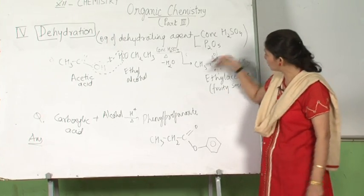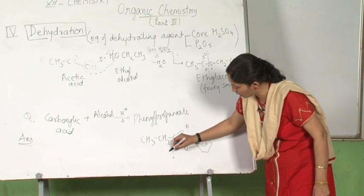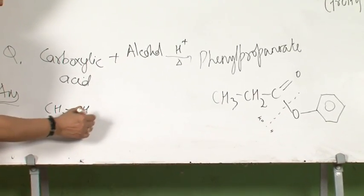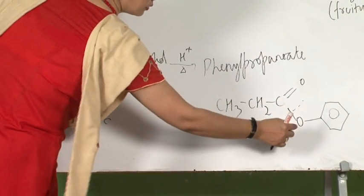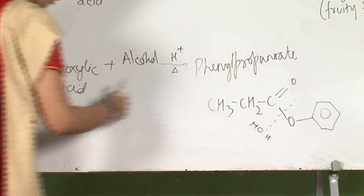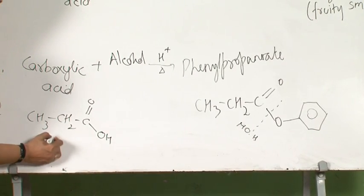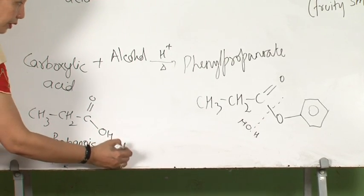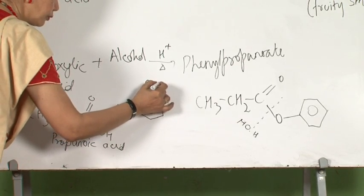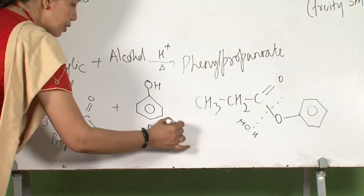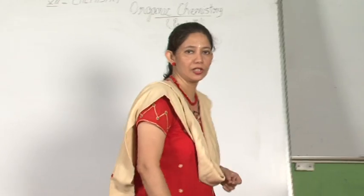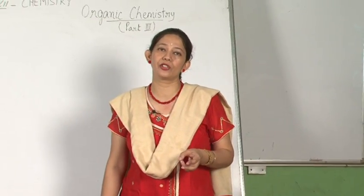Just apply the same concept — where the ester part is, add water: H on this side and OH on this side. The carboxylic acid is CH3CH2 C double bond O OH, which is propanoic acid. The alcohol part is the ring with the OH — that is phenol. If a product is given, you should be able to identify the reactants. I have now completed the four different types of organic reactions: addition, elimination, ozonolysis, and dehydration.